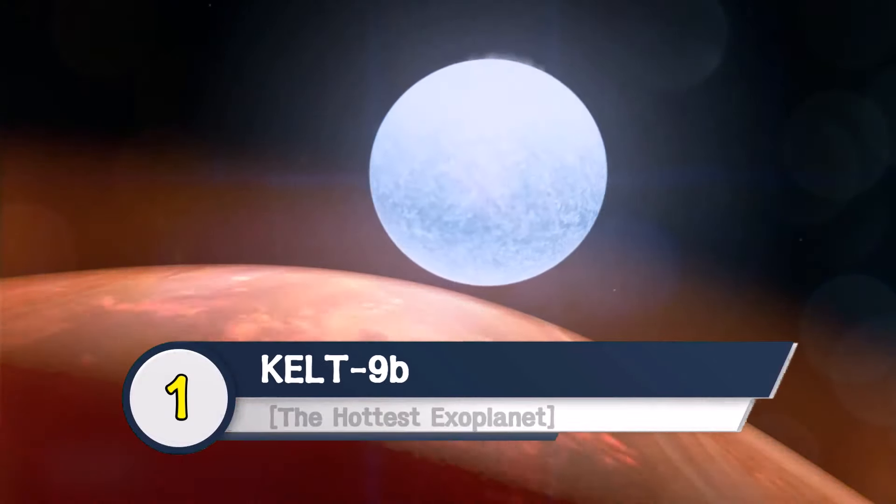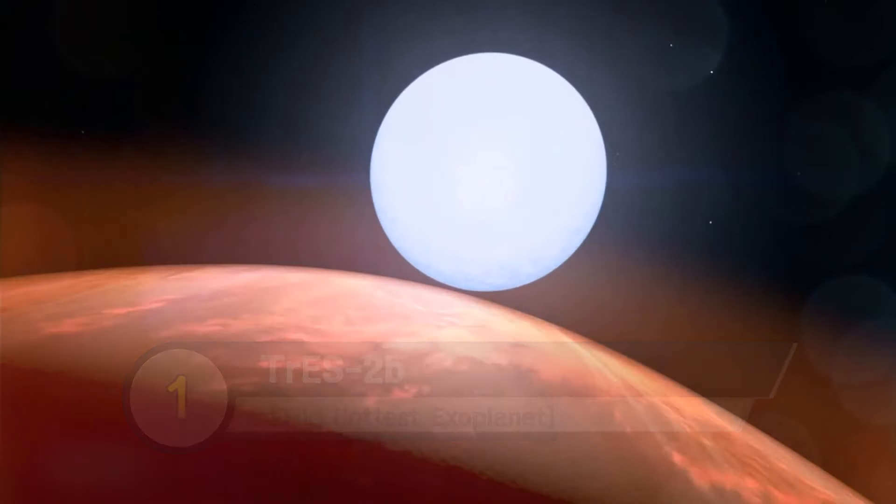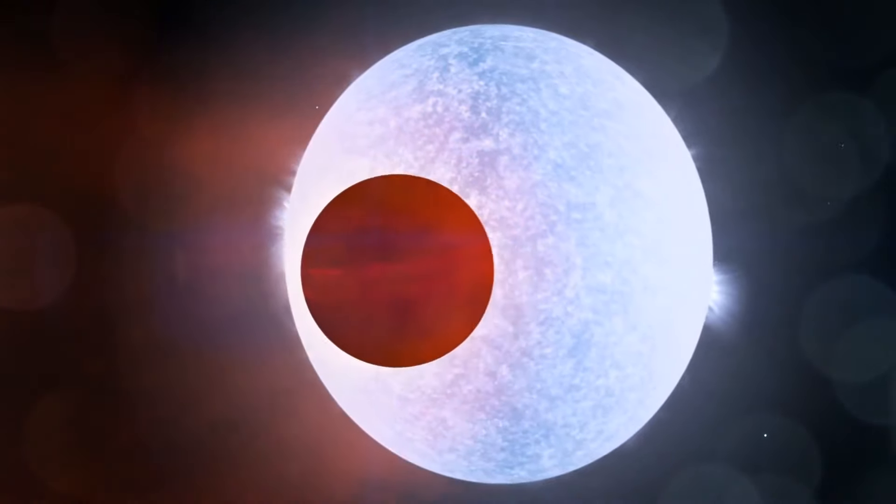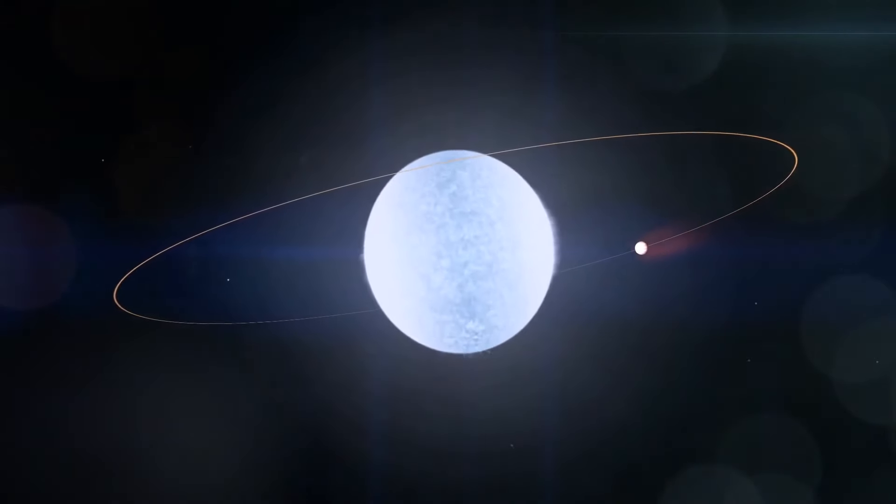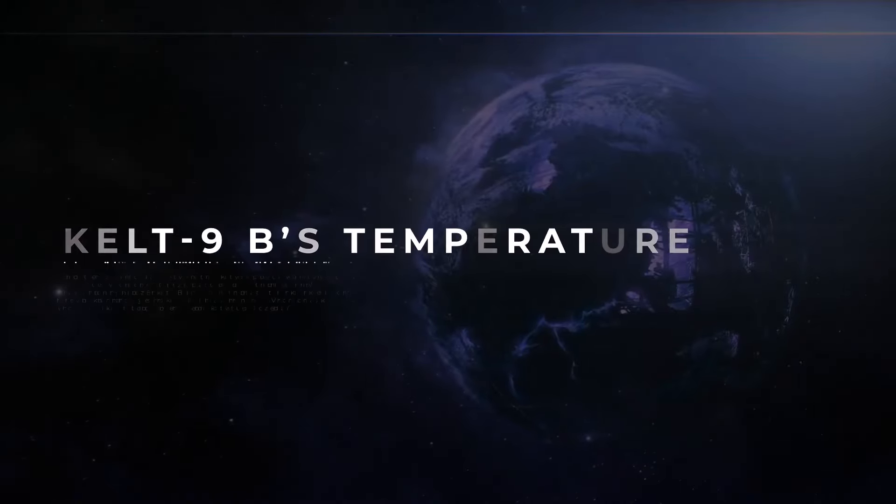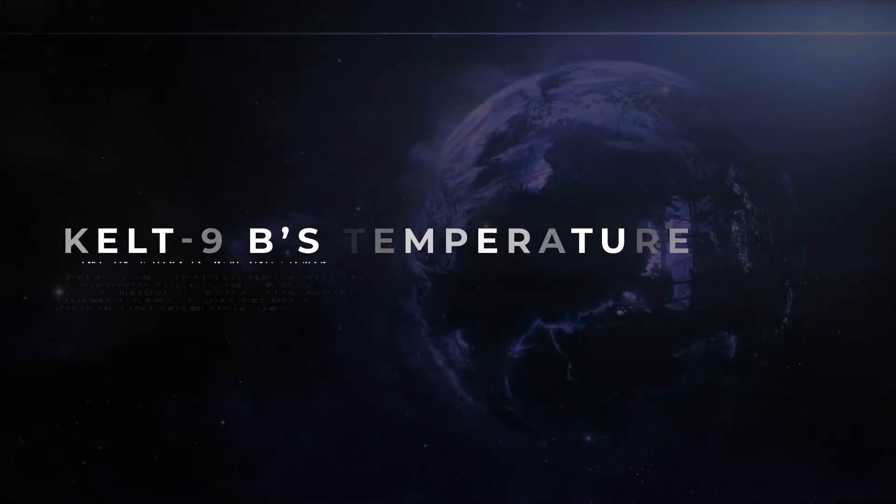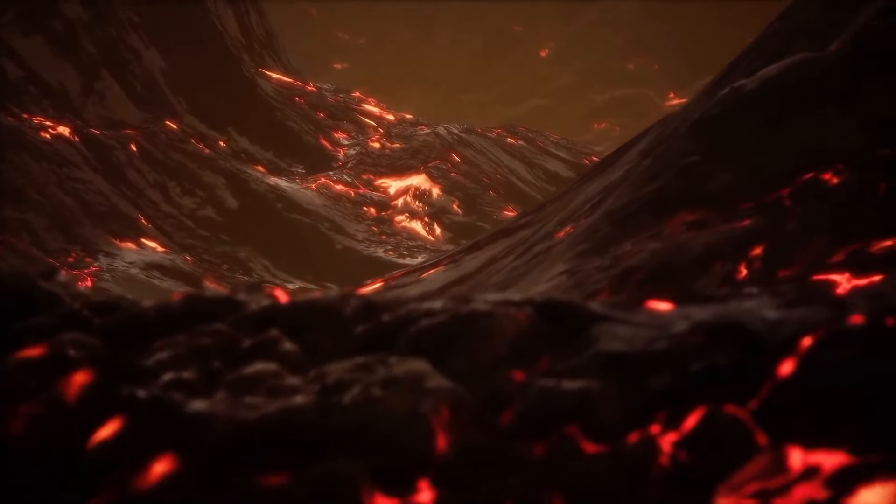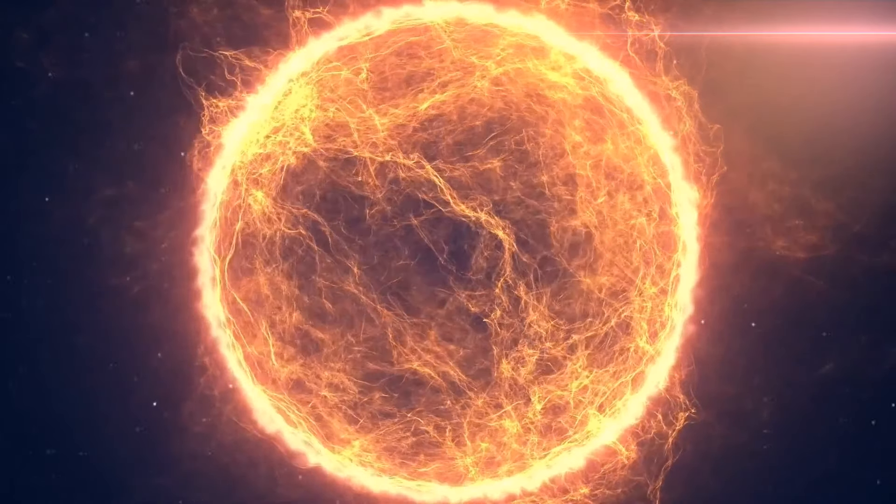KELT-9b, the hottest exoplanet. From the darkest, we move to the hottest. KELT-9b is a weird planet. It's so big it is caught between being a planet and a star. Its proximity to its star makes the planet so hot with a temperature of around 4,300 degrees Celsius, causing its atmosphere to boil into space. A year on this planet is equivalent to one and a half days on Earth.